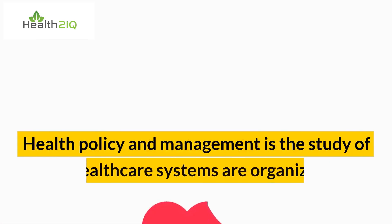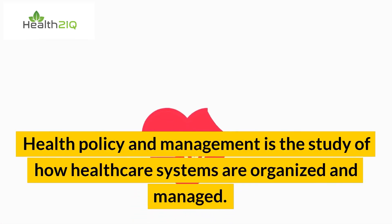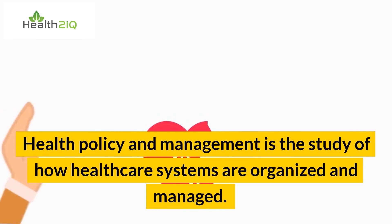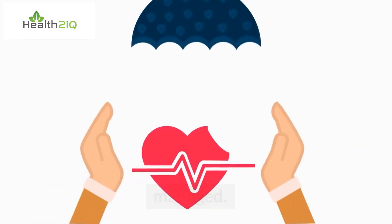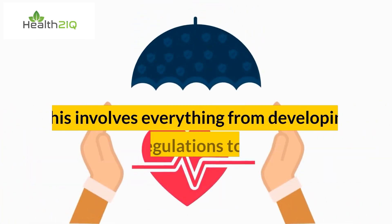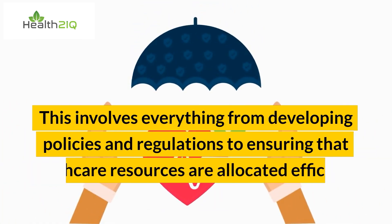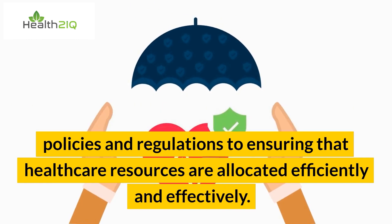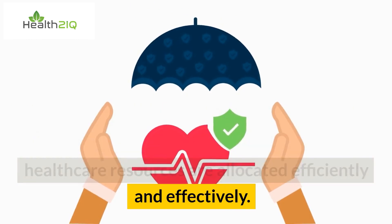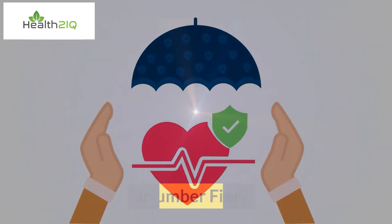Number four: health policy and management is the study of how health care systems are organized and managed. This involves everything from developing policies and regulations to ensuring that health care resources are allocated efficiently and effectively.